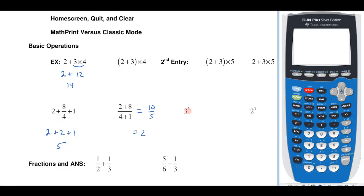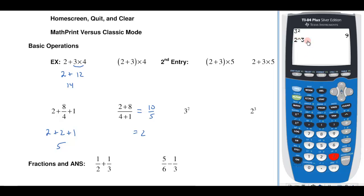Let's see how we do exponents. If I have 3 squared, I can hit 3 and there's a little square button. If I hit that, it's going to square the 3, puts a little smaller 2 next to it, and that's 9. Now if I want a higher exponent, I'll use the up arrow button — the caret key. When you type exponents on a computer you use the caret, and it's the same key on your calculator. So 2 caret 3 means 2 to the third power — that's 2 times 2 times 2, which is 8.